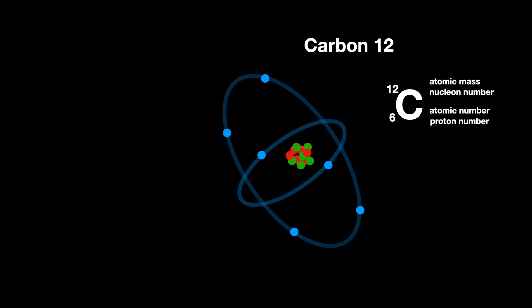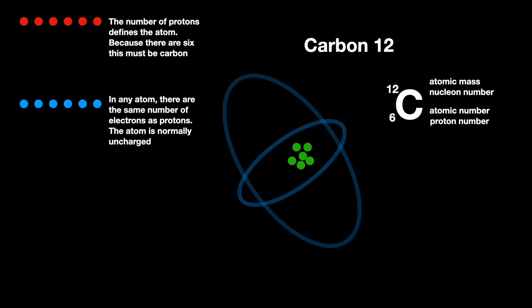If we take this atom apart, it has six protons. Now, the atomic number or proton number defines the atom. This is carbon because there are six protons. As well as having six protons, it has six electrons. In their normal state, atoms of an element have the same number of protons as electrons. The atom is normally uncharged.